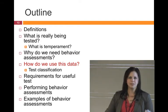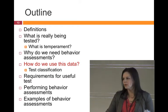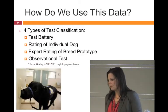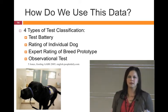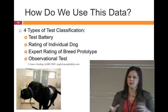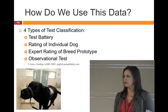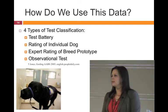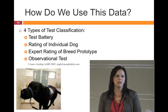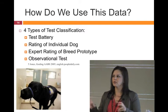What do we do with this information? There are four different types of behavior assessments in the literature. First is the test battery — the one you're probably most familiar with — where we set up a specific set of situations, run the dog through it, and see how they respond with good control over the environment. Second is rating of the individual dog, which is essentially history: what information do we get from the person relinquishing the dog?